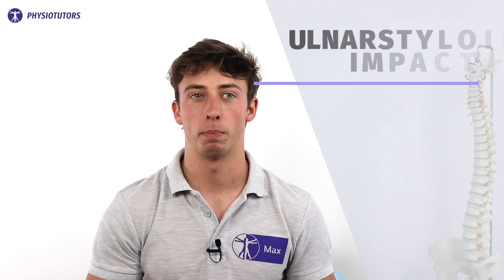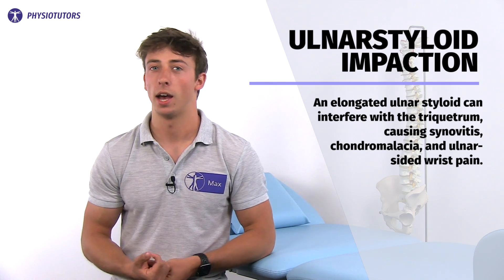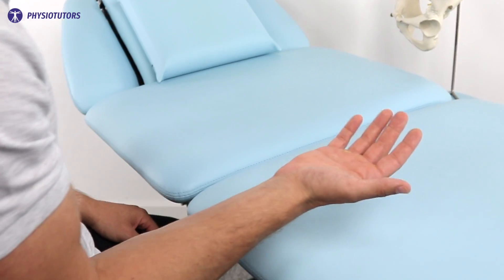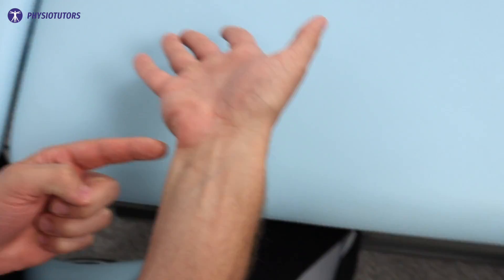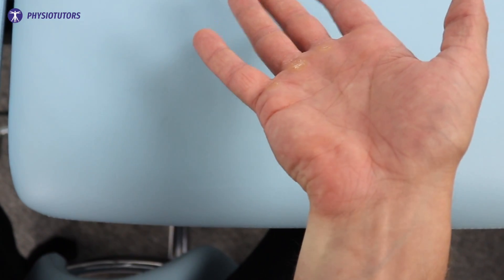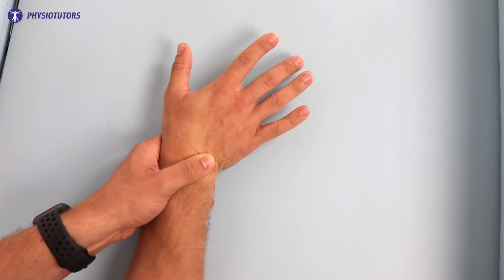Conservative treatment consists of splinting and anti-inflammatories. If ulnar lengthening is present, a shortening procedure can be performed. Ulnar styloid impaction syndrome is a different and less common form. An elongated ulnar styloid can interfere with the triquetrum, causing synovitis, chondromalacia and ulnar-sided wrist pain. In the early stage the TFCC acts as a buffer, but due to repeated movement it gets eroded. The ulnar styloid will then contact the triquetrum directly in supination, wrist extension and ulnar deviation. Pain is located at the distal tip, whereas in ulnar impaction syndrome the pain is more towards the ulnar head and lunate when pronating with ulnar deviation.